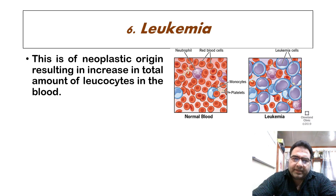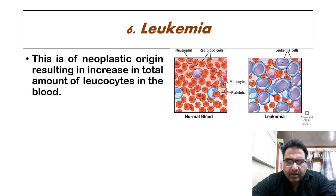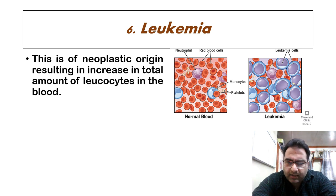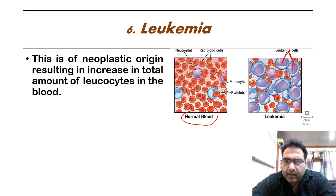The next pathological condition is leukemia, which is of neoplastic origin, resulting in an increase in the total amount of leukocytes in the blood. In normal blood we see normal leukocytes, but in the case of leukemia there is excessive proliferation — an excessive increase — in leukocyte cells.